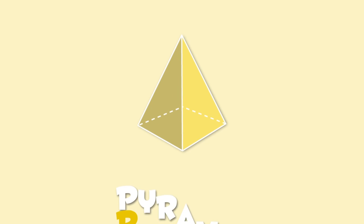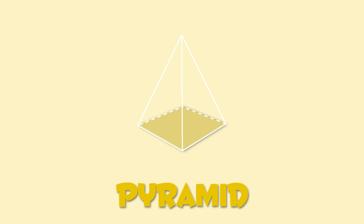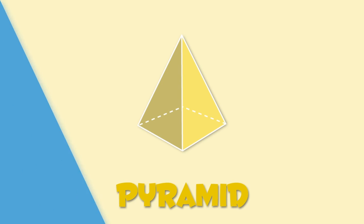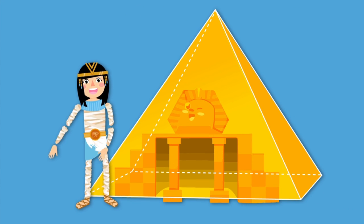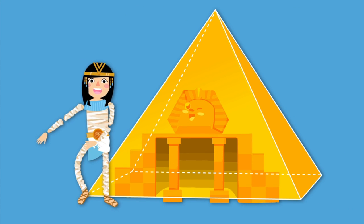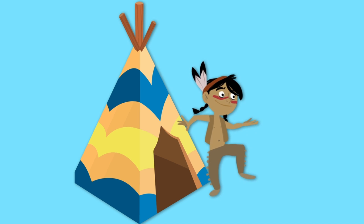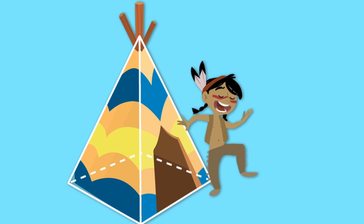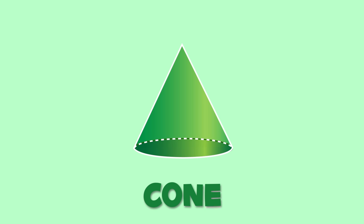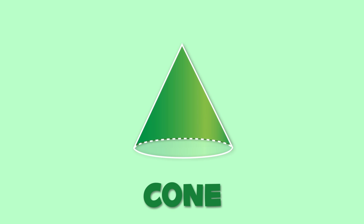Yes, this one is super easy — I'm sure you've seen it before. It's a pyramid! Its base is a polygon and its sides are triangles — all sides meet at a central point called the apex. Just like the pyramids in ancient Egypt or like this Indian-style teepee.